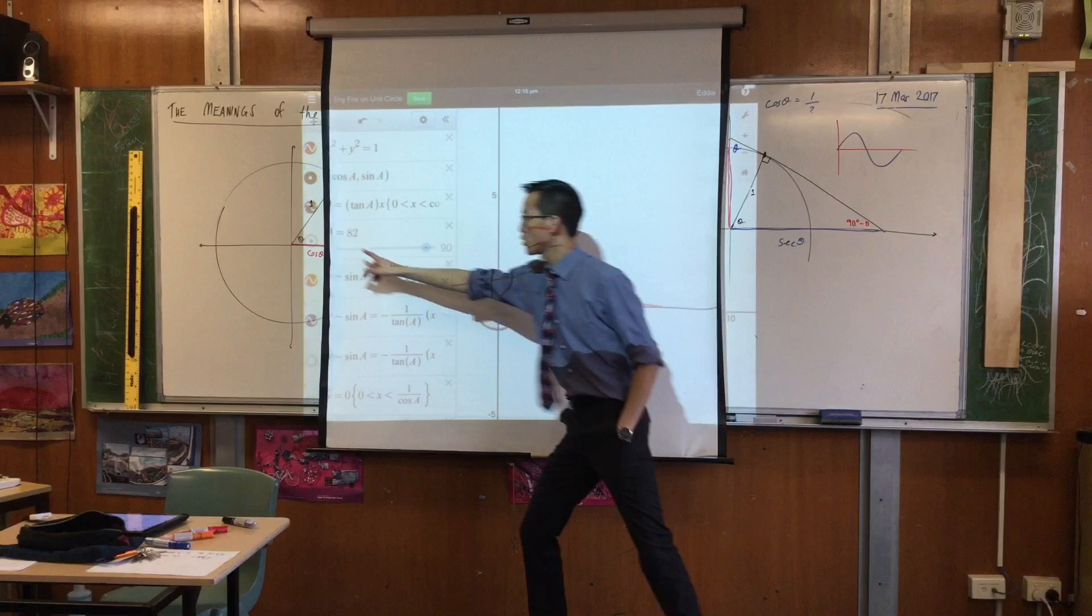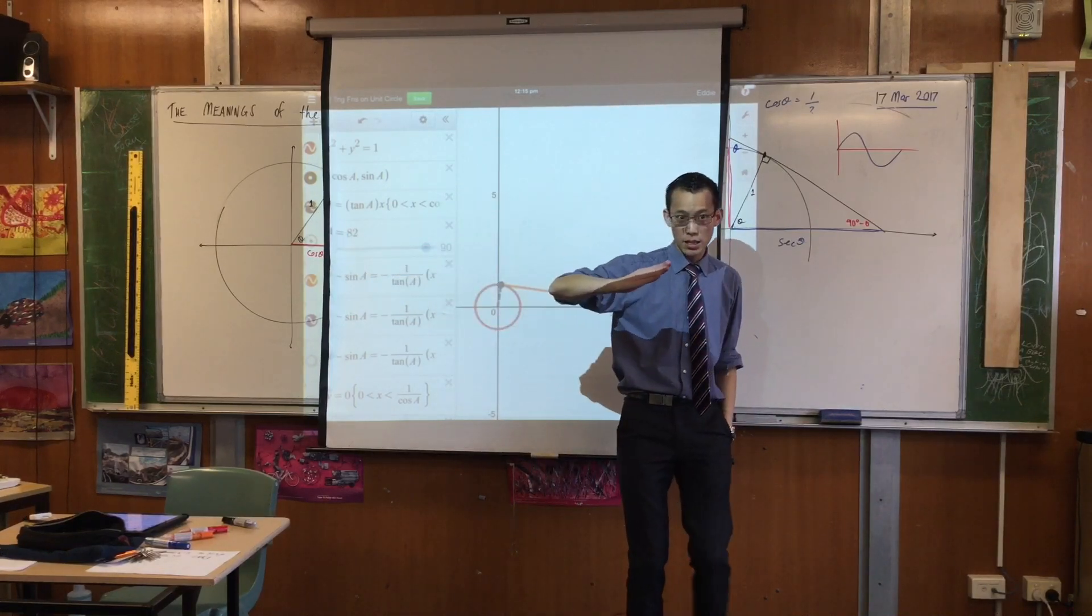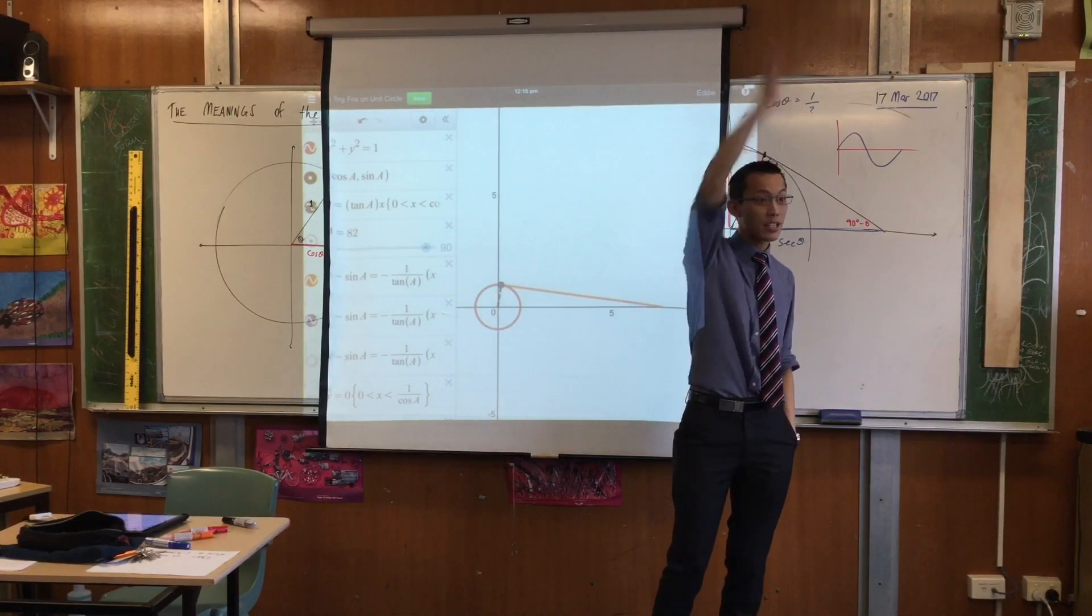Do you have an image of the tan theta graph in your mind? What does tan theta do as it goes from 0 to 90? It increases, it increases, and then it just sort of takes off.